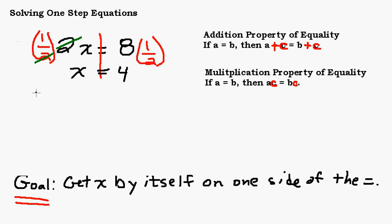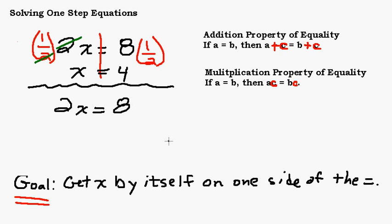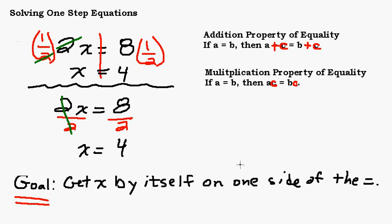Before we try another one, let me show a variation on the multiplication property of equality. Multiplying by one-half is the same as dividing by 2. So instead of multiplying by one-half, a lot of people like to just divide both sides by 2. The 2s will cancel on the left-hand side and we're left with x equals 4. Either approach works. The big thing is to distinguish when to use the addition property of equality and when to use the multiplication property of equality.